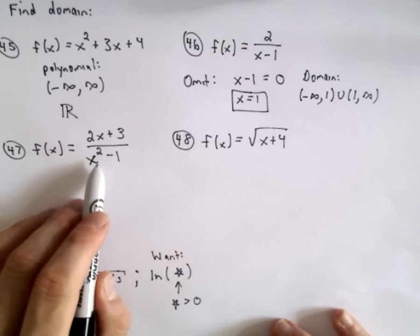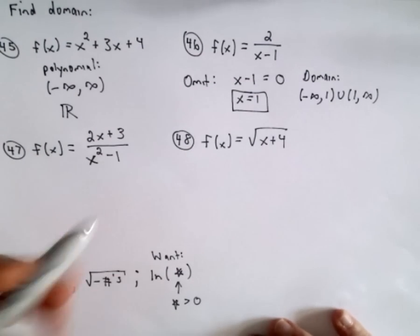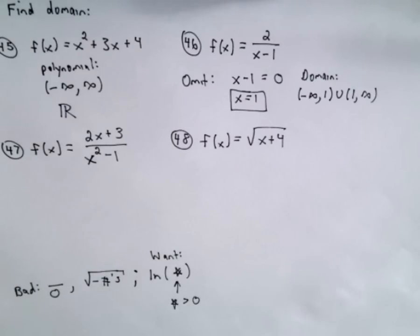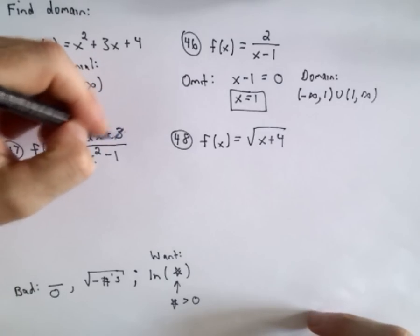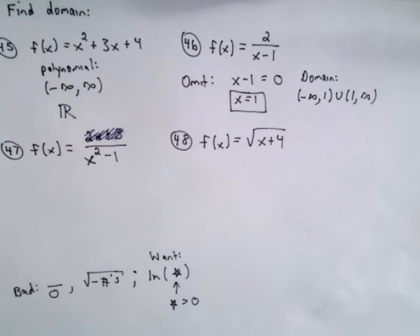So for 47 now, I've got 2x plus 3 over x squared minus 1. The numerator I don't really care about at all. In this case, that's a polynomial, there's no restrictions on that, so I'm not even going to worry about it.